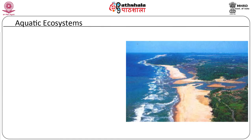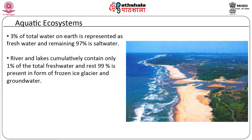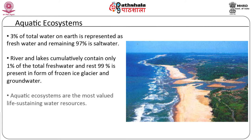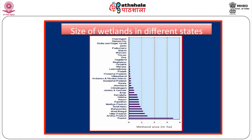Aquatic ecosystems. It is amazing that only 3% of the total water on earth is represented as fresh water and the remaining 97% is as salt water. Further, it is interesting that rivers and lakes cumulatively contain only 1% of the total fresh water and the rest 99% is present in the form of frozen ice, glaciers and underground water. Aquatic ecosystems are the most valued life sustaining water resources. Throughout the world, they are the most productive and potential source of carbon sequestration. The strength of wetlands distributed in different states and union territories of India are shown in the figure. This indicates that Gujarat has the highest wetland coverage while the least coverage is represented by Chandigarh.